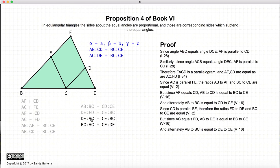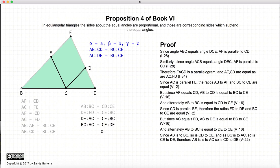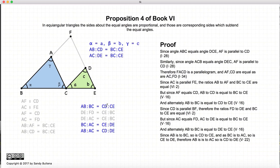Now since DE to AC equals CE to BC, we use Proposition 16 of Book 5 to take the alternate ratios, giving BC to AC equals CE to DE. And we already have AB to BC equals CD to CE. Combining these two relationships via Proposition 22 of Book 5, we can eliminate the middle terms and obtain AB to AC equals CD to DE.